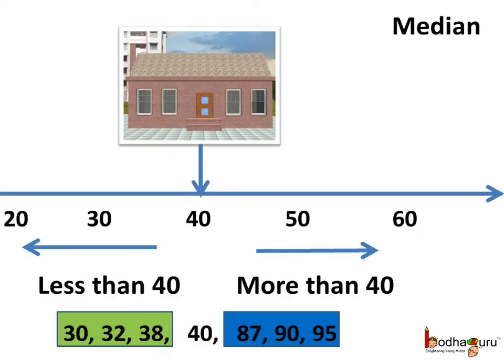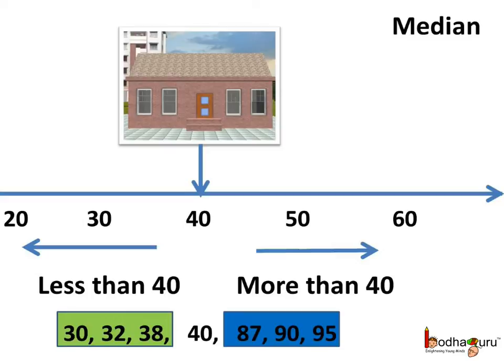The median value divides the list into 2 equal parts. As the list was arranged in ascending order, the left side values were less than 40 and the right side values were more than 40. As he had saved Rs 45 lakhs, he could buy any of the houses costing 40 lakhs or less, because they were well within his planned budget.